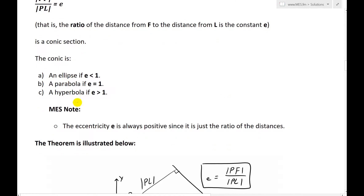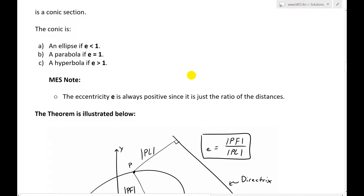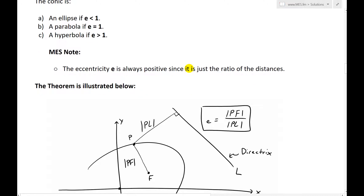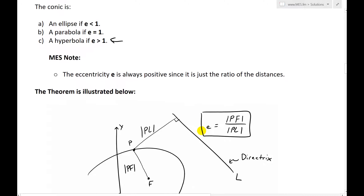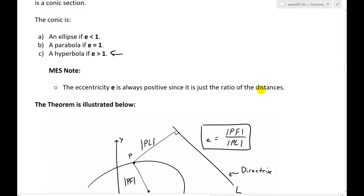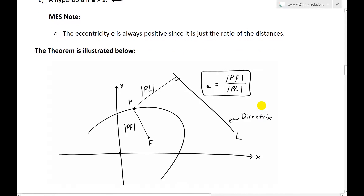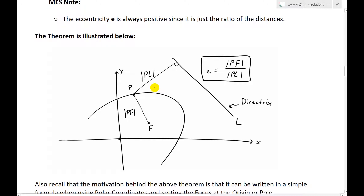The conic is an ellipse when e is less than 1, which I proved in my earlier video, and a parabola when e equals 1, which I also proved. Now I'll do this proof for a hyperbola, where e is greater than 1. Note the eccentricity is always positive since it is just a ratio of distances, which are always taken to be positive — hence the absolute value sign. The theorem is illustrated below graphically.